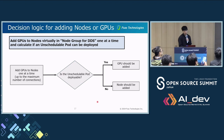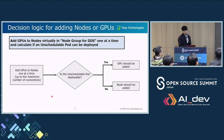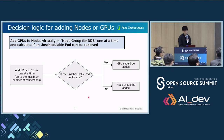Let's look at how DDS decides whether to add GPUs or nodes. In a nutshell, DDS virtually adds GPU to a node one at a time, then simulates whether the unscheduled pod becomes deployable. If the pod can be deployed by adding GPU, DDS requests only GPU. On the other hand, if the pod cannot be deployed even by adding the maximum number of GPUs to all nodes, DDS will request additional nodes. This is the basic logic.